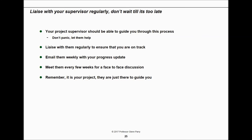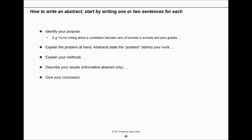An extra note on how to write an abstract — people often forget to put one at the front of their work. It's quite easy: one sentence for each of these will often do the job. Identify your purpose, explain the problem, explain the methods, describe the results, and give your conclusions. That gives you five to ten sentences, which is often enough for your abstract.